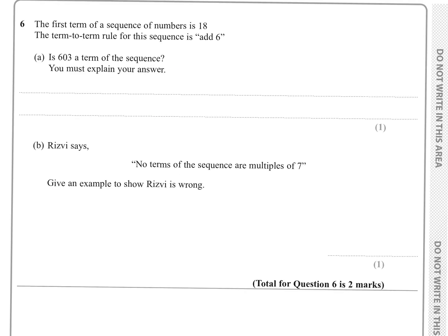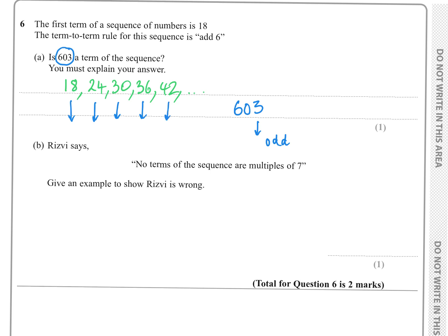Question six: the first term of a sequence is 18 and the term-to-term rule is add 6. The sequence goes 18, 24, 30, 36, 42... Is 603 a term? Note that 603 is odd, whereas all terms in this sequence are even — starting with an even number and adding an even number always gives an even number. So 603 cannot be a term.